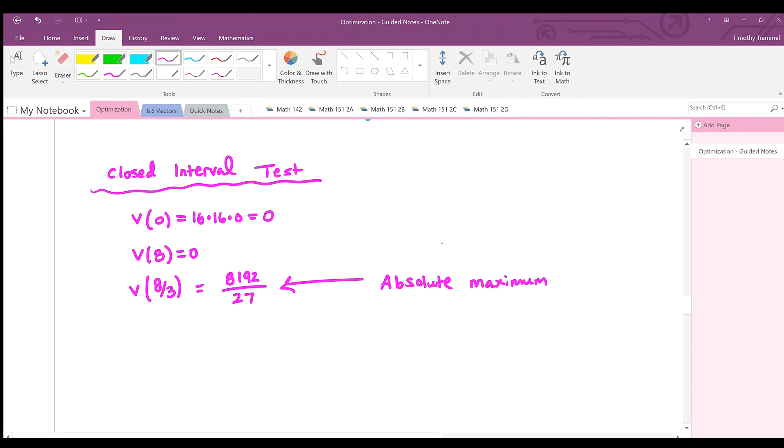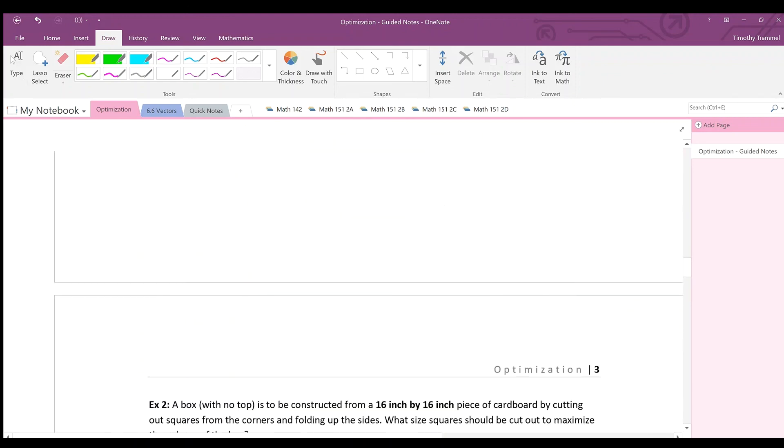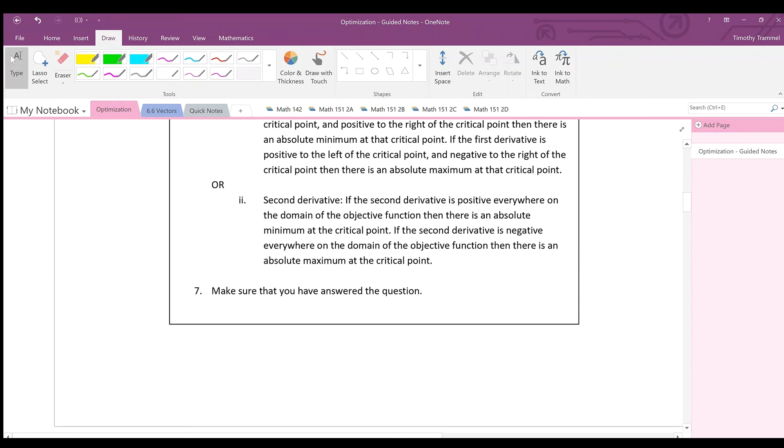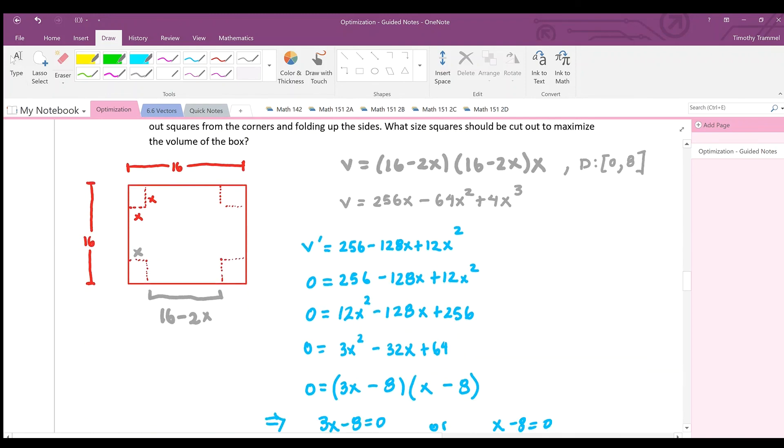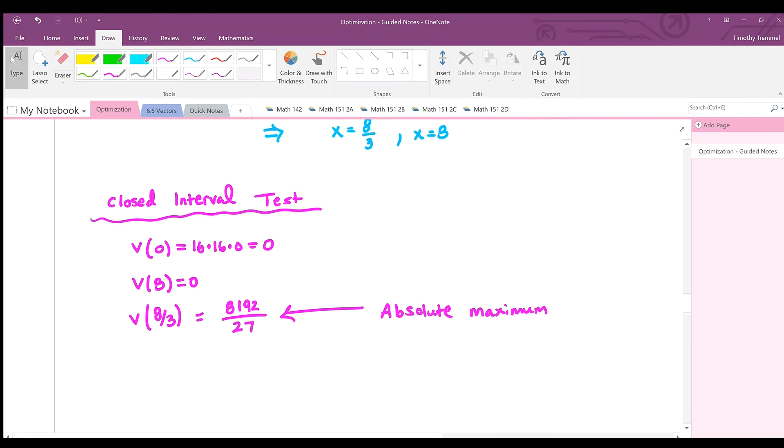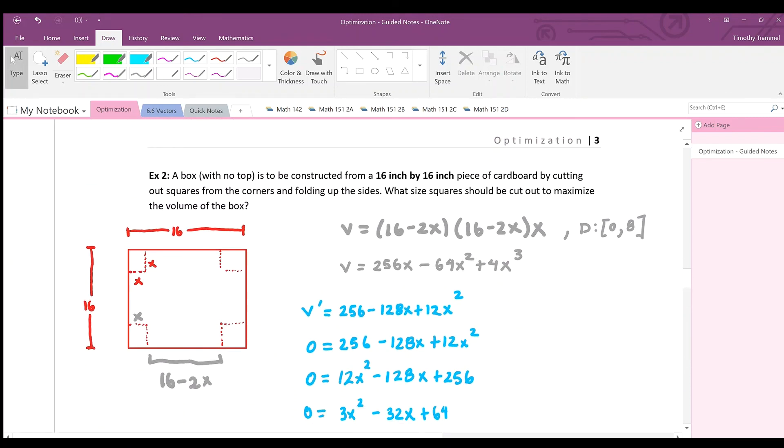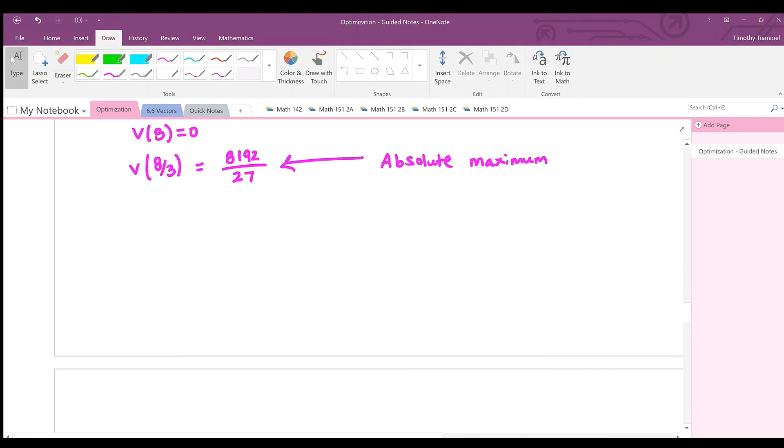And I should point out, this is the absolute maximum of the volume, right? This is the biggest possible volume. And you might have noticed that in the steps I had written for us in order to do these problems, number 7 says, make sure you've answered the question. Well, have we answered this question? We were asked to find an absolute maximum, but we were actually asked what size squares should be cut out to maximize the volume of the box. So that means that these squares should be actually 8 thirds by 8 thirds inches.